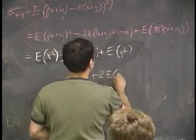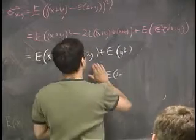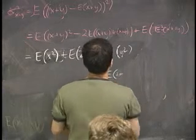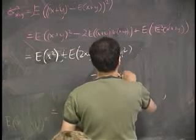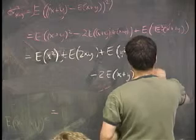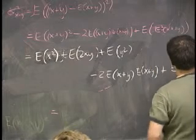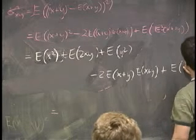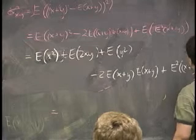Minus 2 times the expected value — we can pull this out again — of x plus y. I guess we can split this up again, which is the expected value — let's see — x plus y, times the expected value of x plus y, where I pull those two things out, plus the expected value of x plus y squared.